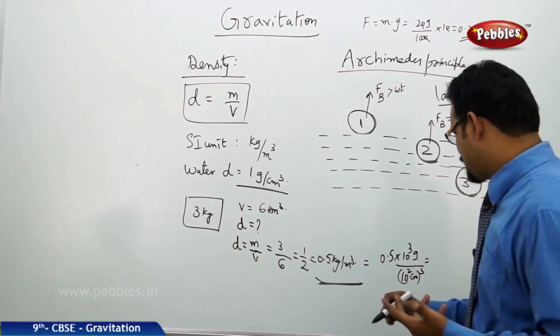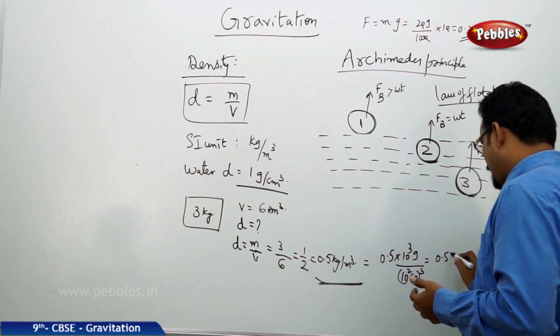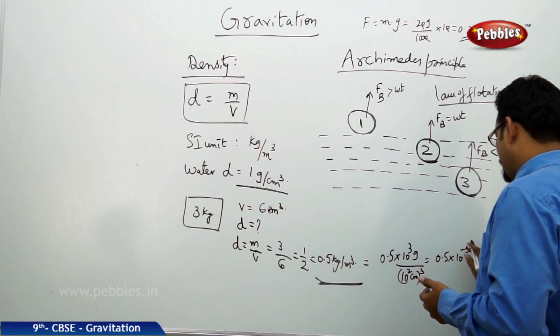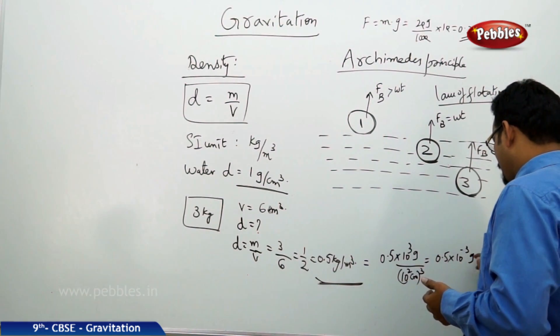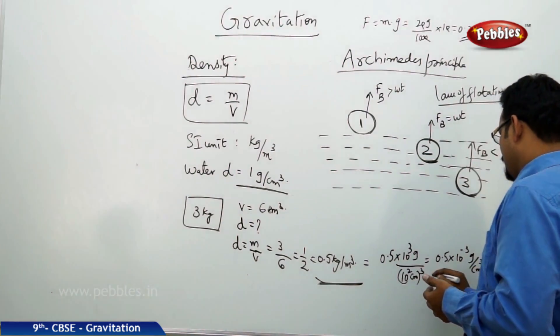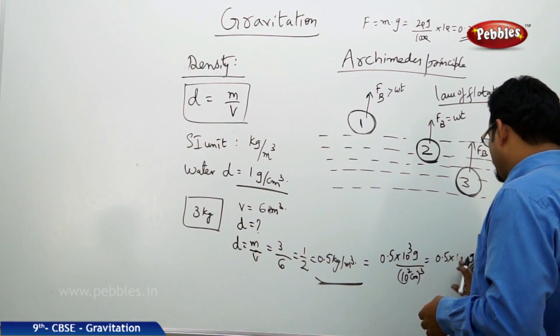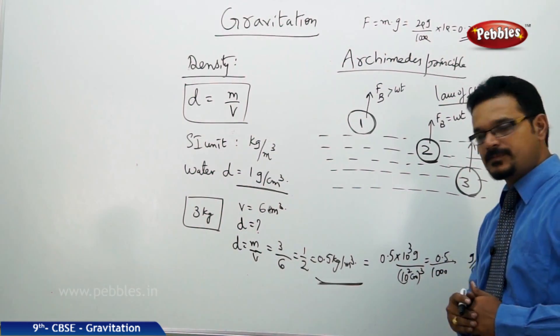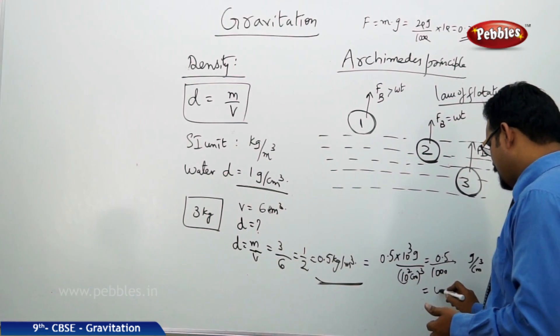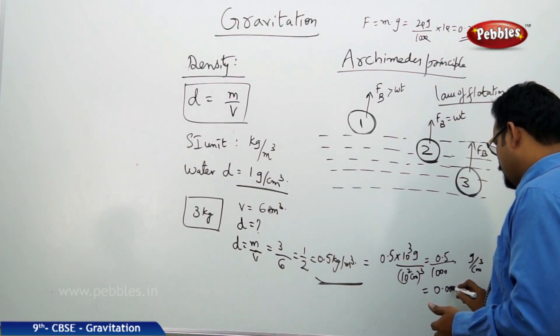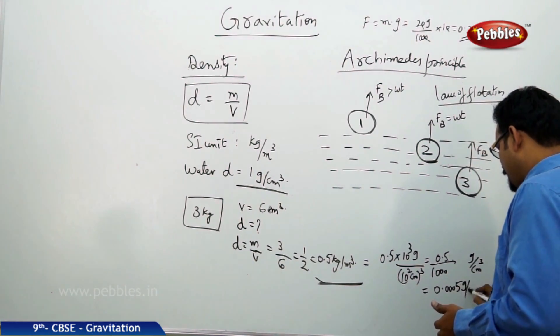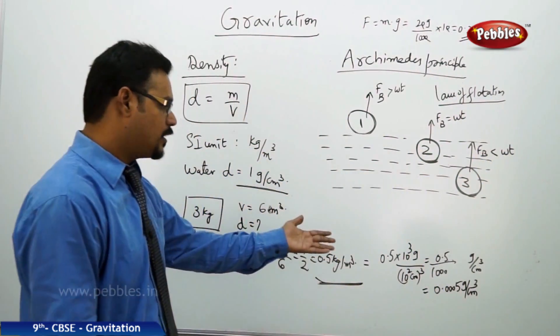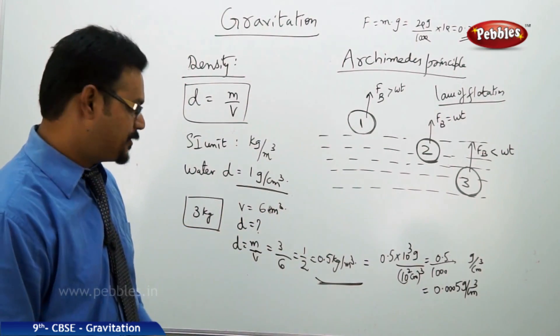So quickly if you do the calculation, 0.5 × 10⁻³/10⁻⁶ = 0.5 × 10⁻³ gram per centimeter cube. So this is nothing but equals to 0.5 by 1000. Simple, if you do more simplification, 0.0005 gram per centimeter cube. So by doing this calculation we got 0.0005 gram per centimeter cube.